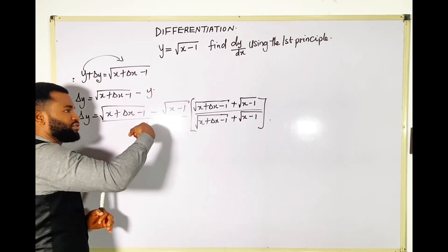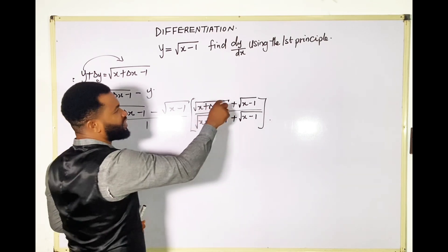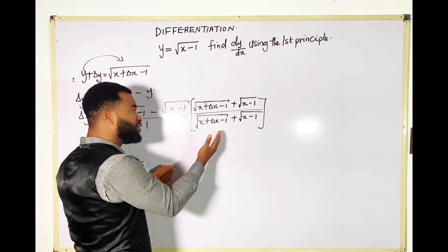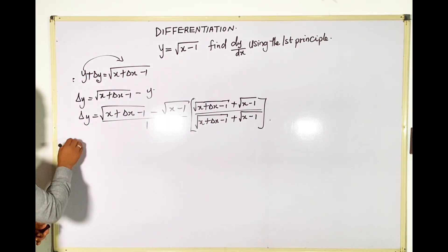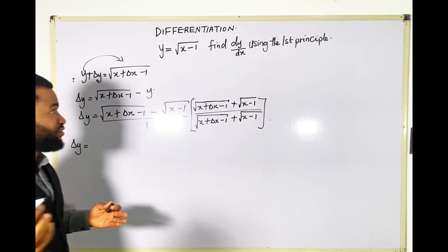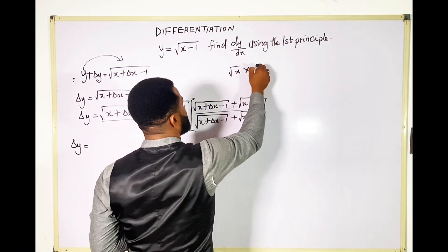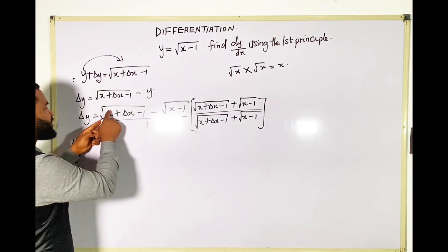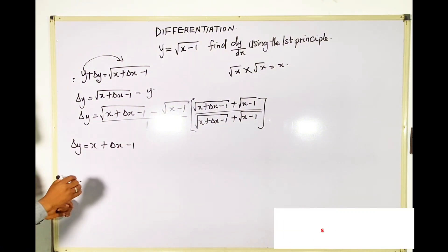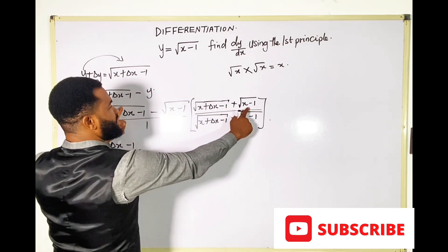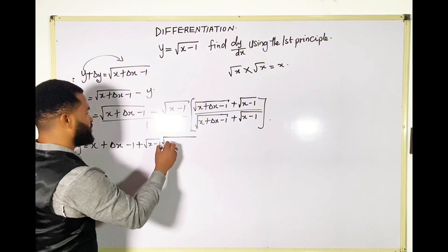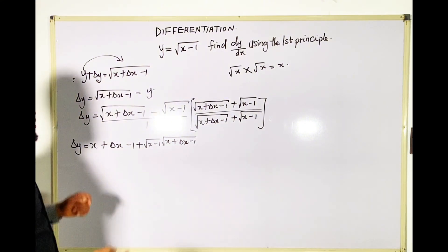Remember, this is all over 1. What I have in the numerator here is the same as what I have in the denominator, so I have not changed anything — this divided by this is 1. I'm doing this in order to cancel the root. So Δy equals everything here multiplied by everything here. Root multiplied by root just gives the value: root (x + Δx − 1) times root (x + Δx − 1) gives (x + Δx − 1). Then I also have plus root (x − 1) times root (x + Δx − 1).